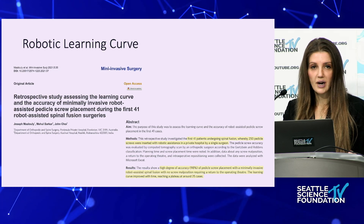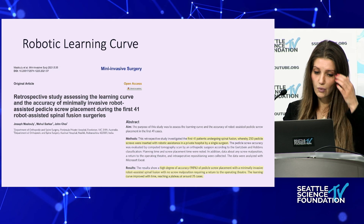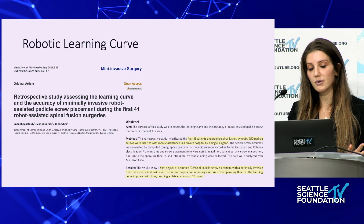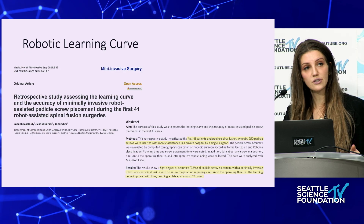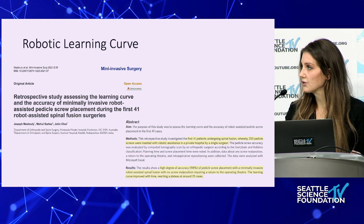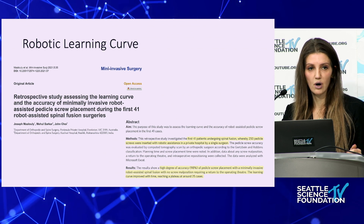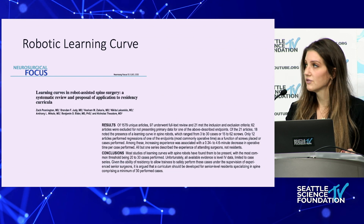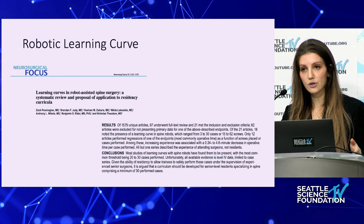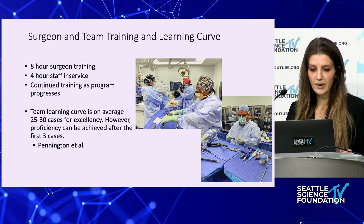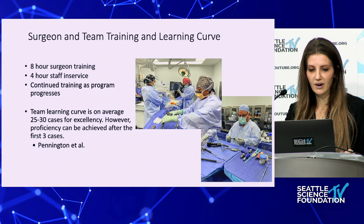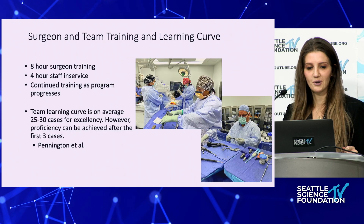Why should we use robotics then? A high degree of accuracy of pedicle screw placement is achieved by the majority of surgeons, but for those of us in training institutions, the robot can act as an extra safeguard — allowing residents to train effectively without compromising patient care. Learning curves in robotics, however, are still something we need to be mindful of, and training both the surgeon and the appropriate team is important. Here we have a photo of my team and my residents.